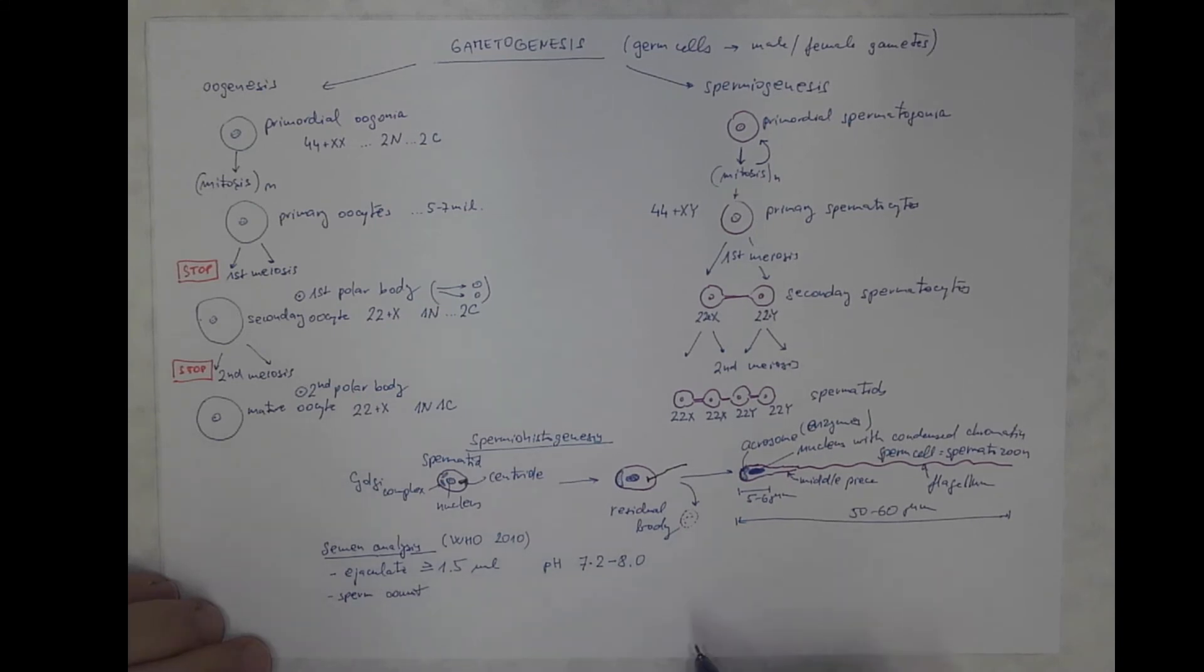So, the sperm count. How many sperm cells should be there? It should be at least 15 million per milliliter, and the total sperm count should be over 38 million.